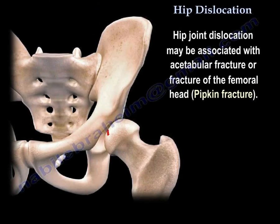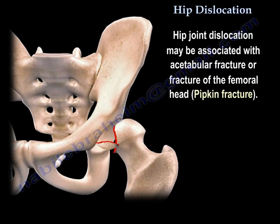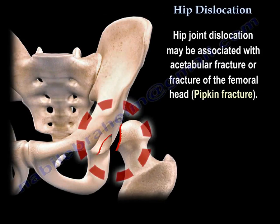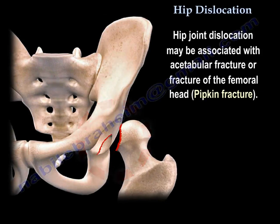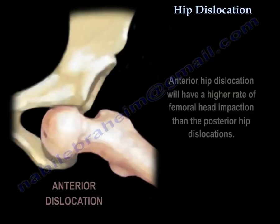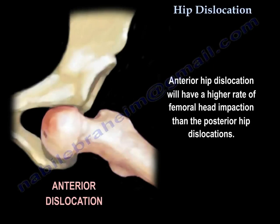Hip joint dislocation may be associated with an acetabular fracture or fracture of the femoral head — called a Pipkin fracture. Anterior hip dislocation will have a higher rate of femoral head impaction than posterior hip dislocations.